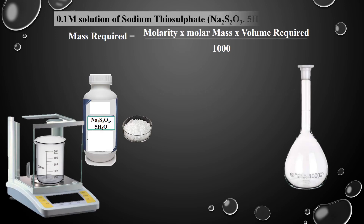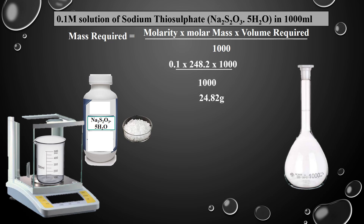To prepare 0.1 molar solution of sodium thiosulfate in 1000 mL: put 0.1 in molarity, 248.2 in molar mass (as written on the bottle as 248.2 g/mol), and 1000 in volume required. Divide the answer by 1000 mL — we get required mass 24.82 grams. Take 24.82 g of sodium thiosulfate in a beaker, dissolve in water, and dilute up to 1000 mL. This is the 0.1 molar solution in 1000 mL.